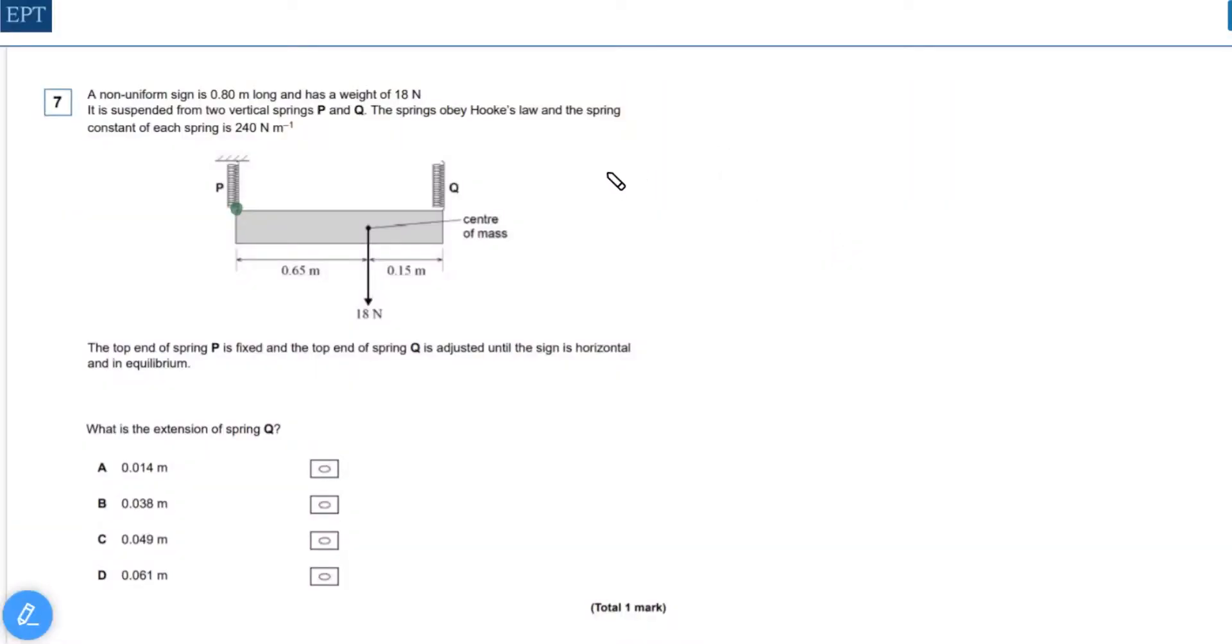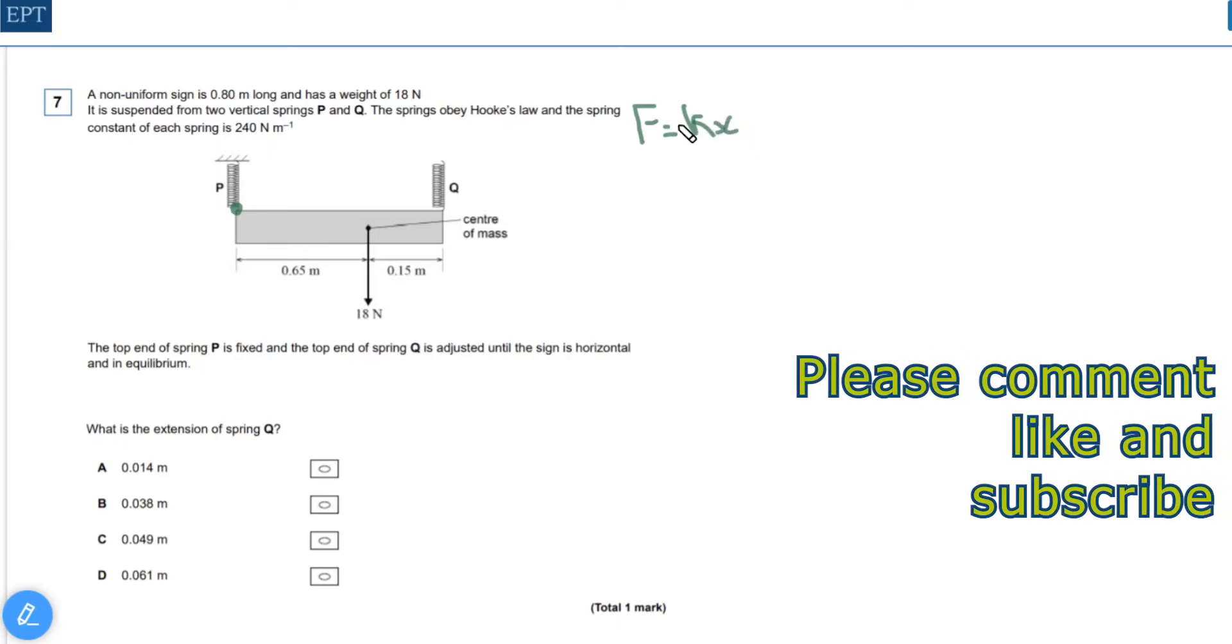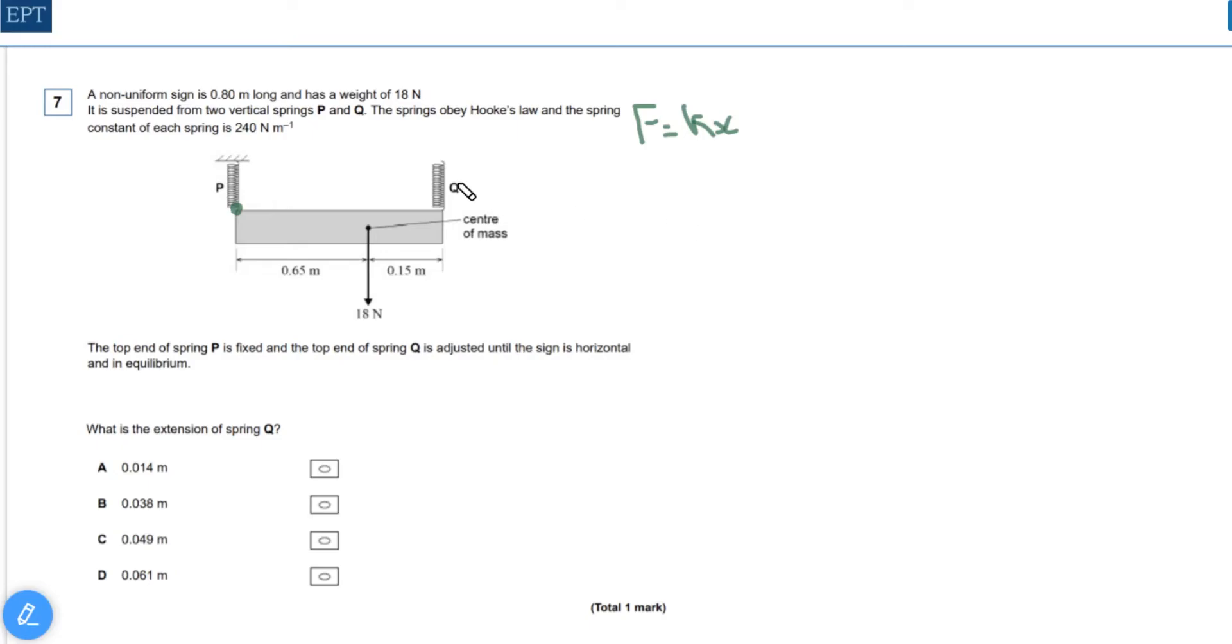To find the extension of spring q, we have to start by working out the force acting on it and then using f equals kx. We're given the spring constant, and the best way to approach this question is to consider taking moments about p. If you do moments about p, then we can ignore any force acting on p.